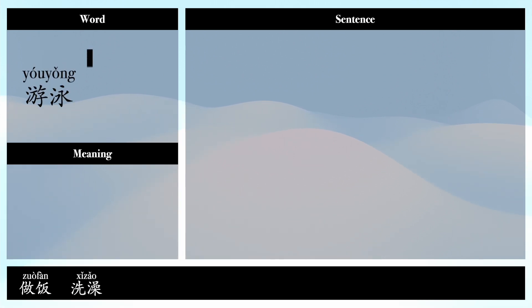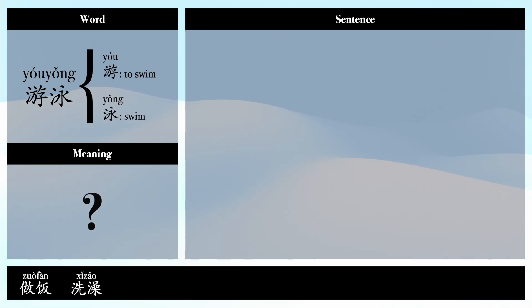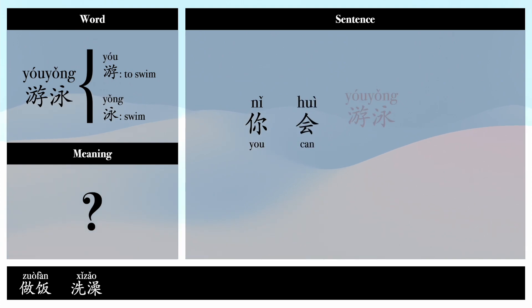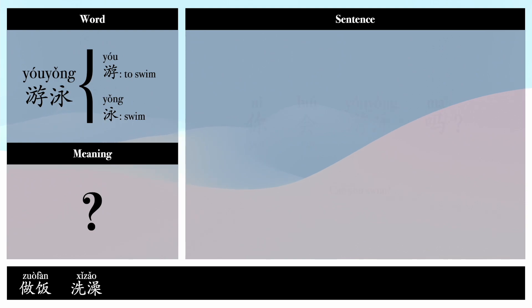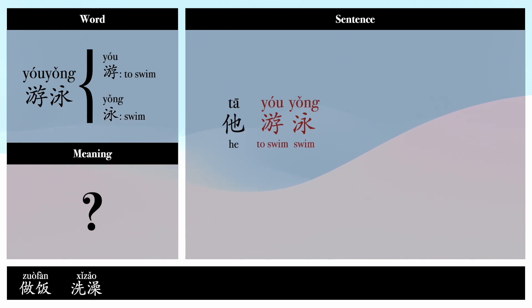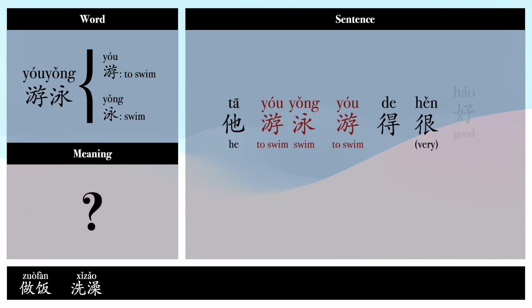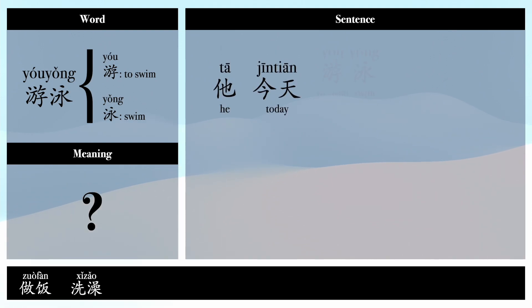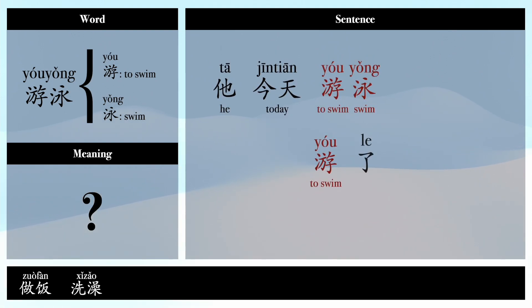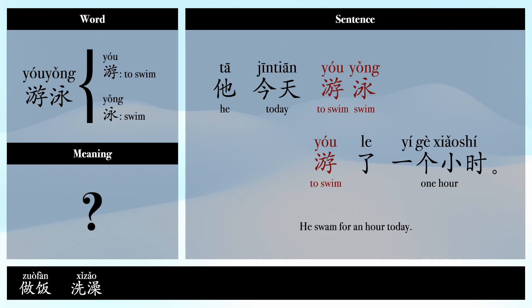游泳 — 游: to swim, 泳: swim. Example sentences: 你会游泳吗? (Can you swim?) 他游泳游得很好。(He swims very well.) 他今天游泳游了一个小时。(He swam for one hour today.)